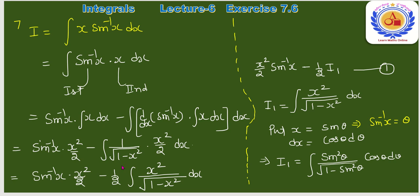sin⁻¹(x) as it is, ∫x dx = x²/2। Derivative of sin⁻¹(x) = 1/√(1−x²)। So: sin⁻¹(x)·x²/2 − (1/2)∫x²/√(1−x²) dx। We mark this as equation (1) and the integral as I₁।